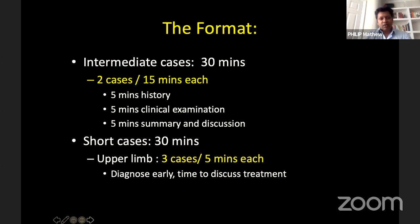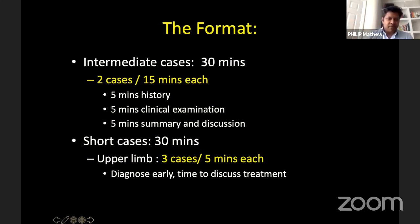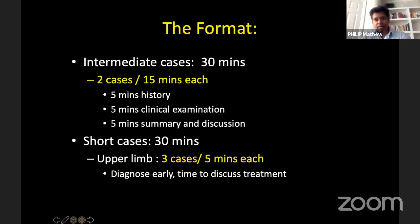Then you have short cases, usually an upper limb and a lower limb case. For the upper limb you usually get about three cases, five minutes each — moving from one case to the next quickly. You have a few seconds to make a quick diagnosis and leave some time to discuss your treatment. One of the key things is to not worry about how badly or how well you did at the last station. Focus on the station you're at, put all your effort into conveying whatever information you need, and don't worry about what happened previously.